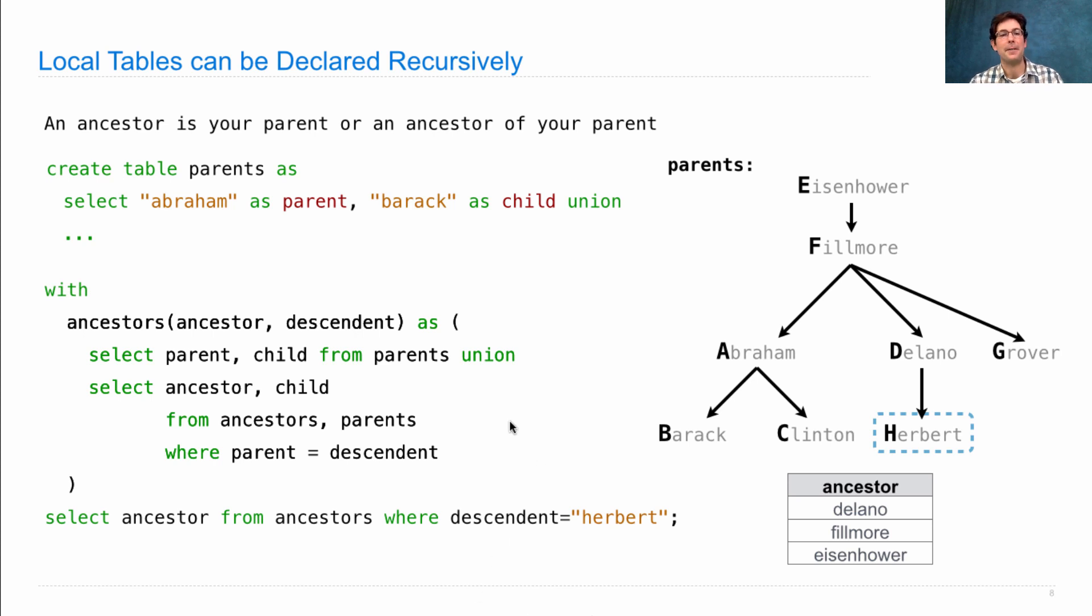So we have a familiar scenario, a base case here, where we describe some things that are in the table already, and then a way to compute a new row from an old row, which may involve joining ancestors with something else.